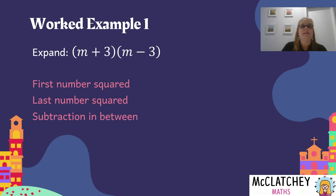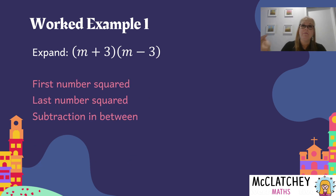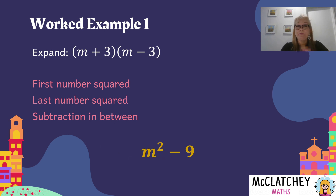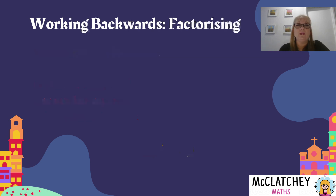Our shortcut is: square the first number, square the last number, and put a minus in between the two. So squaring that first number gives me m squared, and squaring that second number gives me nine. Put a minus in between and you get m squared take away nine. I love this shortcut — it's a fun one to use.